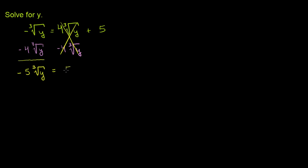We've almost isolated the cube root of y. We just have to divide both sides of the equation by negative 5. So we divide both sides by negative 5, and those cancel out. We are left with: the cube root of y is equal to 5 divided by negative 5, which is negative 1.